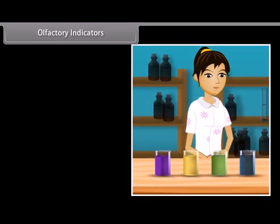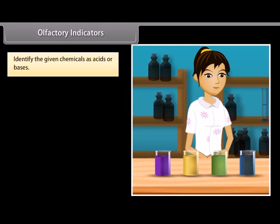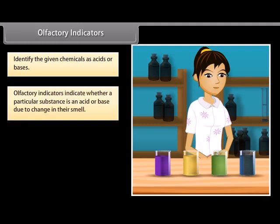Olfactory indicators. Suppose you are given four chemicals and asked to identify them as acids or bases. How will you do it? Let us find out. We have olfactory indicators, which indicate whether a particular substance is an acid or base due to change in their smell. They are used in the laboratory to test whether a solution is a base or an acid by a process called olfactory titration. An olfactory indicator works on the principle that when an acid or base is added to a substance, then its odor cannot be detected.